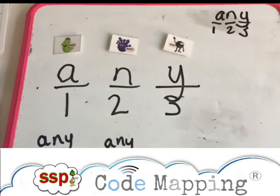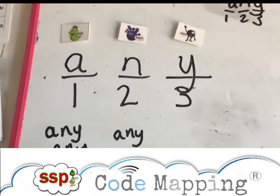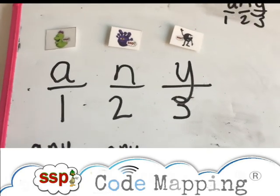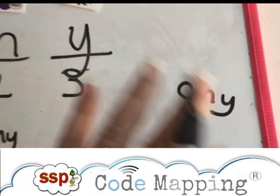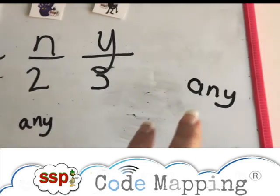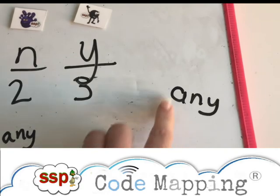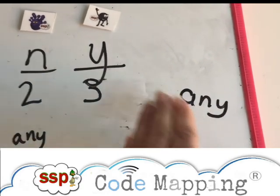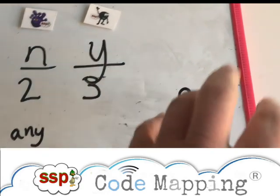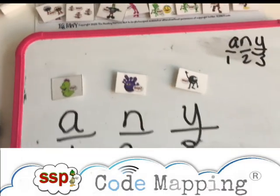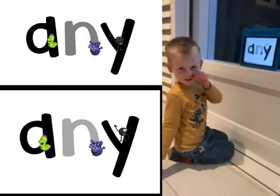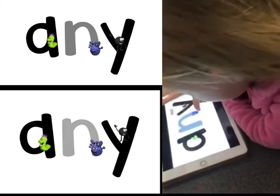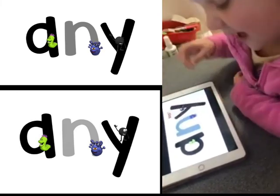This is visible learning, visible teaching. But the main thing for you to know is that just because he can look at this word and say 'any' means nothing with regards to his learning. What we want him to understand is the mapping of it. So even if you say to him, eh, n, e — any, you don't know if he's understood that.